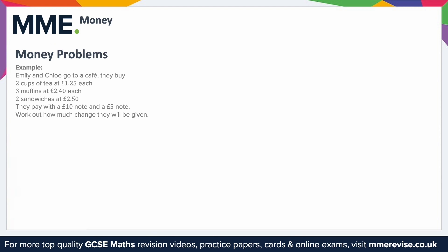Work out how much change they will be given. We can split this into separate sections. First, the tea: two cups of tea at £1.25 each, so that's 2 × £1.25, which is £2.50. Notice how I've included the zero on the end — since all money should be to two decimal places, we write £2.50 rather than 2.5.